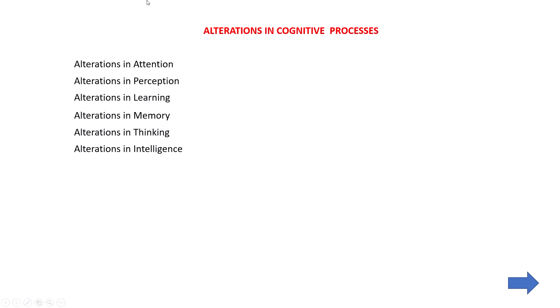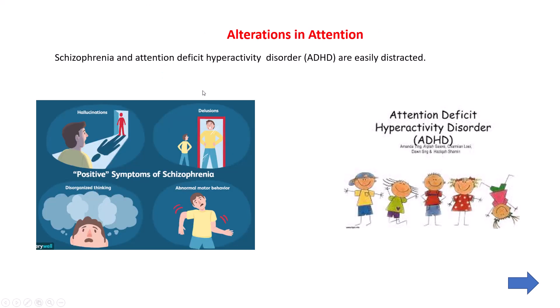The first alteration is in attention. Attention means our focus on any object or anything. If you fail to focus correctly, then it is called an alteration in attention.